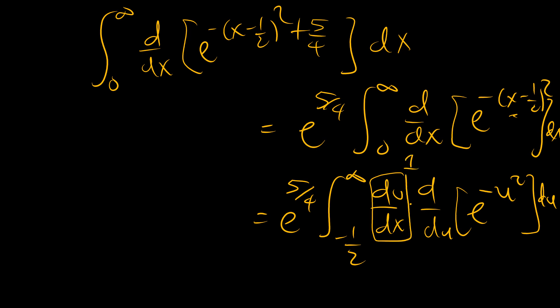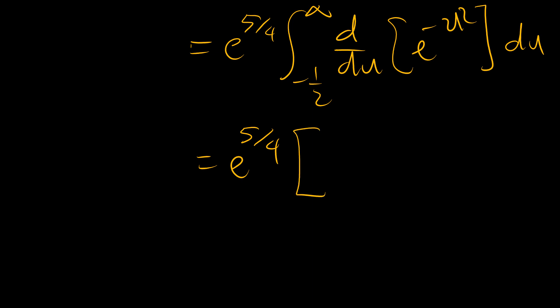So our problem now becomes e to the power of 5 over 4 integral from negative 1 half to infinity, when u tends to infinity of e to the power negative, sorry, we forgot the differential there. So this becomes e to the power of 5 over 4, and since this is, we are integrating and differentiating in the same function, so we get the same functions out, it's negative 1 half to infinity.